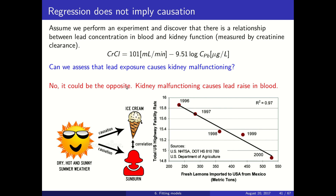But it could be the opposite. It could be that kidney malfunctioning causes lead to rise in blood. So from a regression, we cannot know which one of the two is the cause of the other. That is one problem.